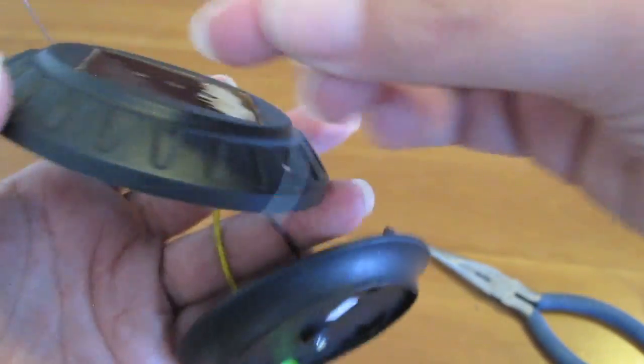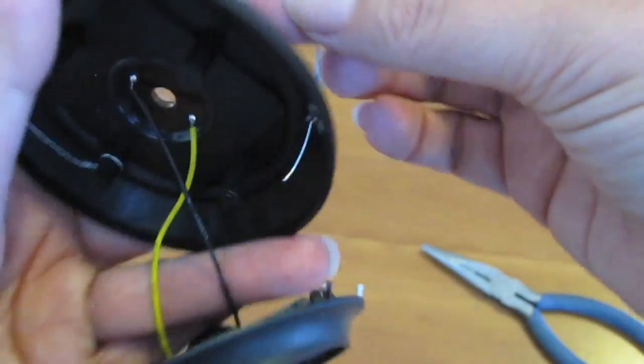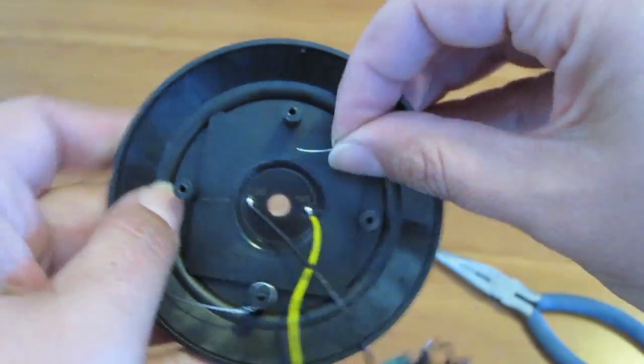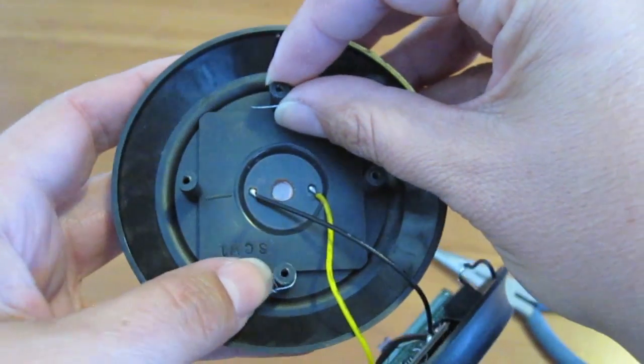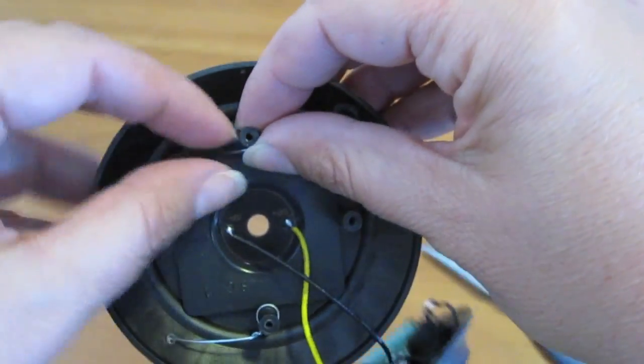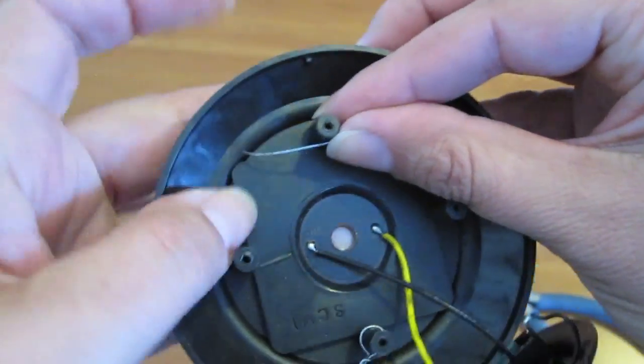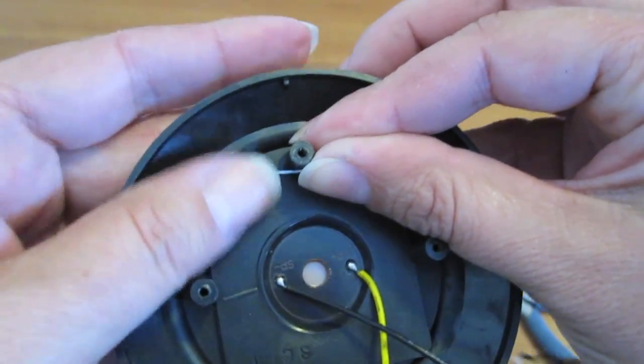I'm going to stick the other end through, and I want to wrap it around the opposite. I wrapped the first one on this side, so I'm going to wrap this one around the opposite one. Give myself about, I don't know, three quarters of an inch, maybe an inch, to wrap.